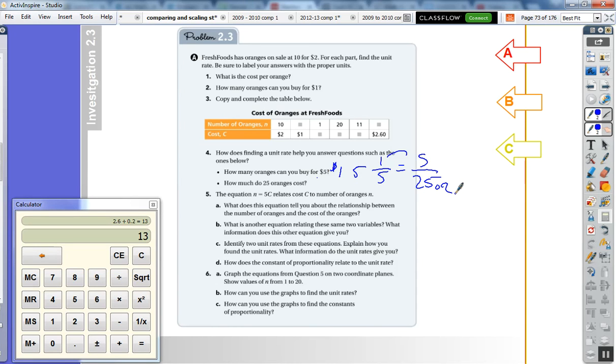The equation n equals 5c. So the n is the number of oranges, so the number of oranges equals 5 times the cost.